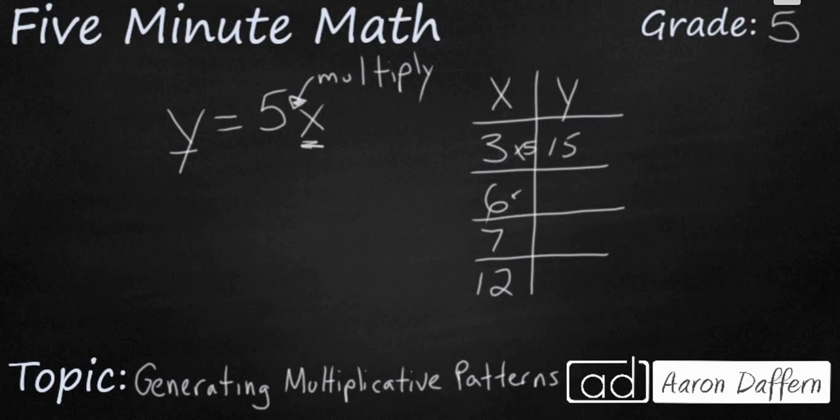So each of these x's is going to be multiplied by 5. So 3 times 5 is going to be 15. 6 times 5 is going to be 30. 7 times 5 is going to be 35. 12 times 5 is a little bit bigger. That is going to be 60. So you see how that works out?